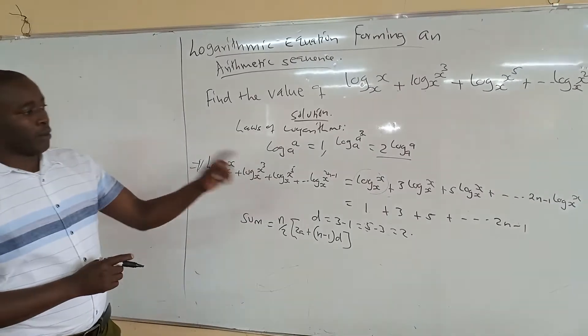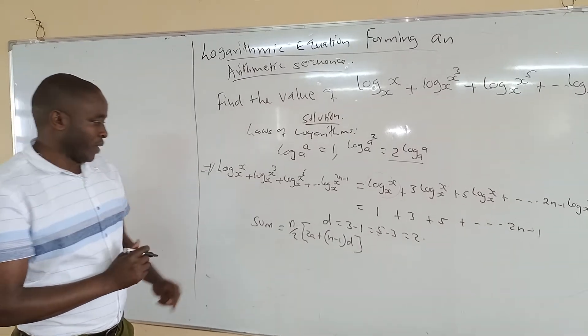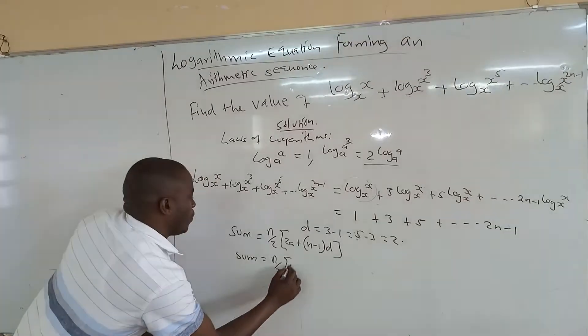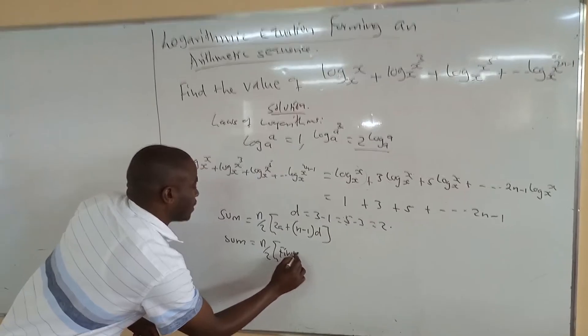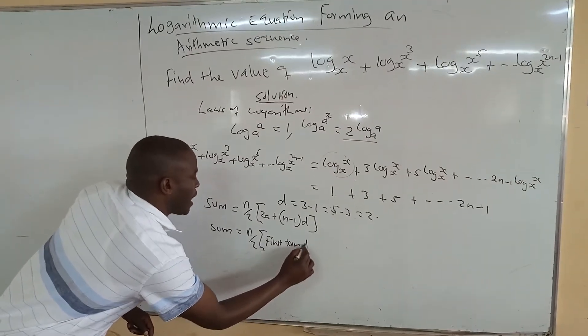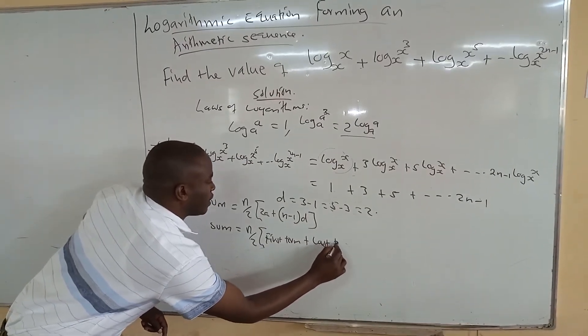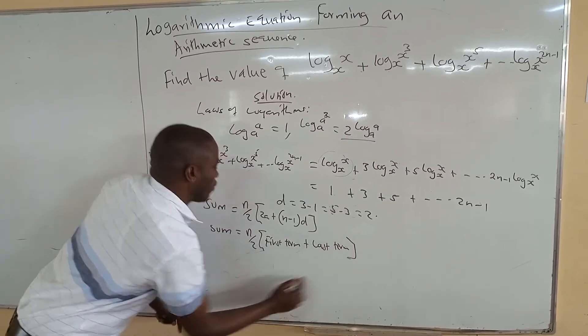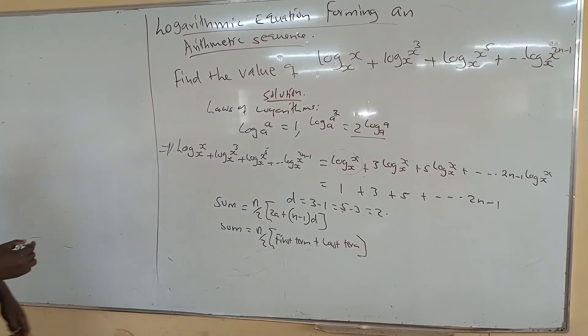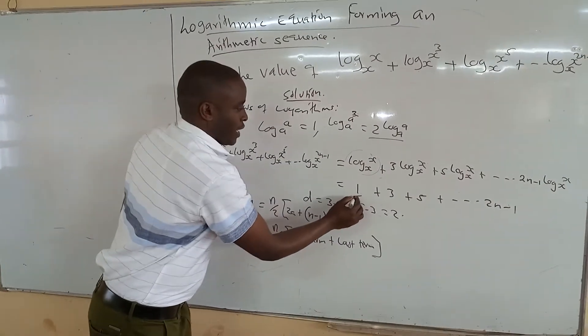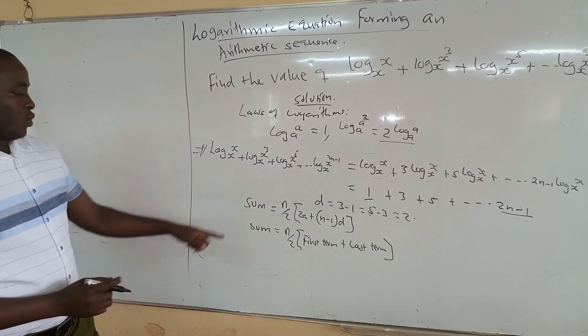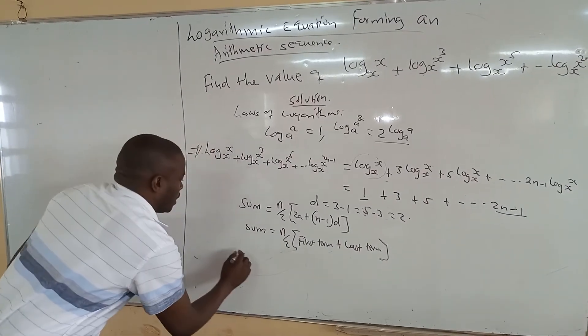But in this case, we don't know the number of terms, but we know the last term. There is also another formula that says sum equals to n over 2 into first term plus last term. So I think this one will now work for us. The second formula. Because we know the first term is 1 and the last term, we know it is 2n minus 1. So we can use that one to get the sum.